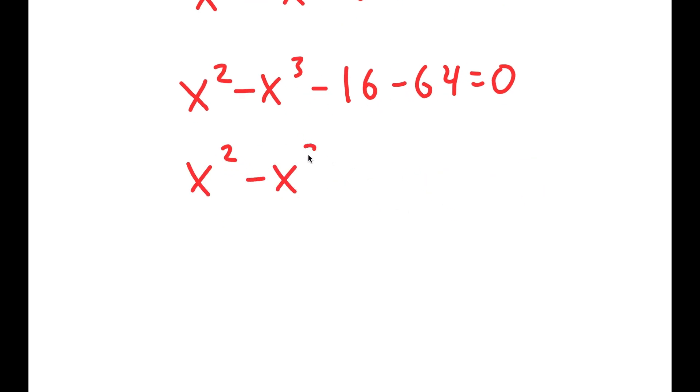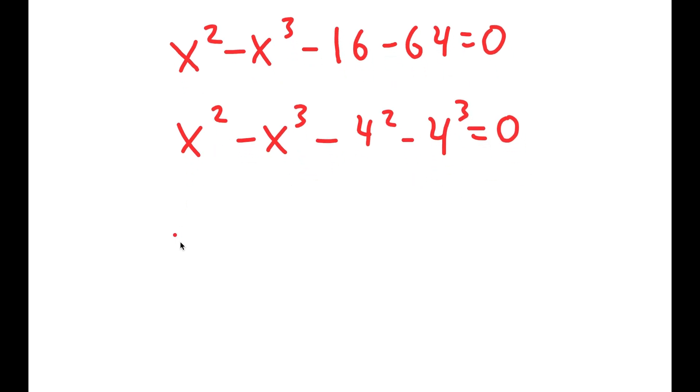And now this can be written as -4² - 4³. Now I'm going to group x² with 4² and x³ with 4³.